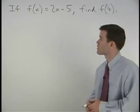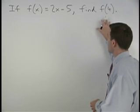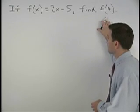Here we're given the function f of x equals 2x minus 5, and we're asked to find f of 4.